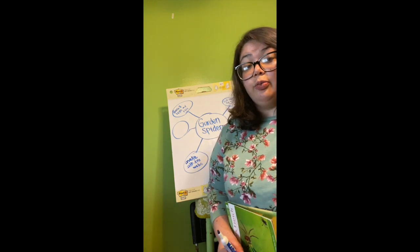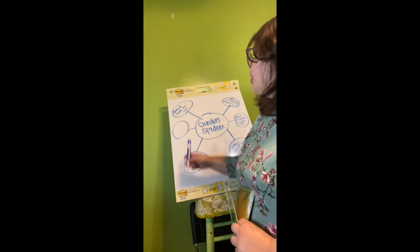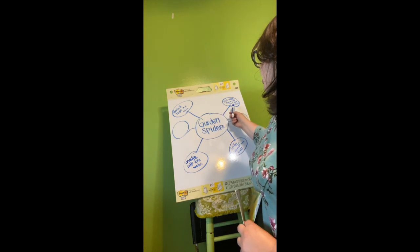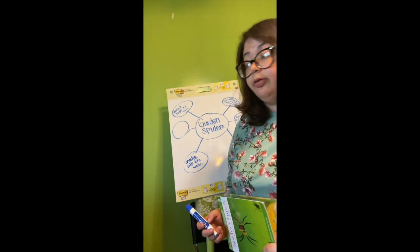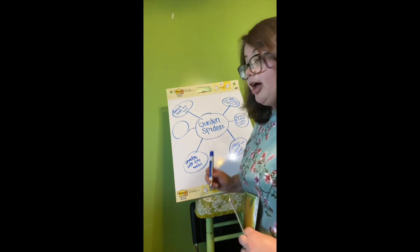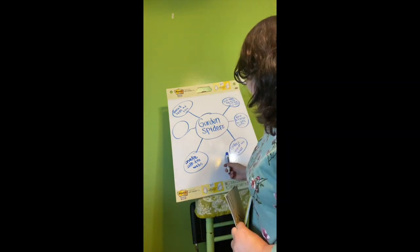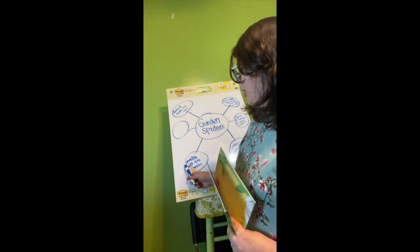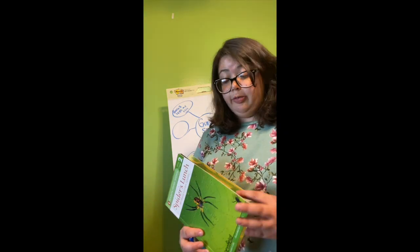So far on our web, I have that spiders have eight legs and eyes, they look small far away but are big up close, they have fangs to bite with, these garden spiders cannot see very well, and they make silk-like webs.